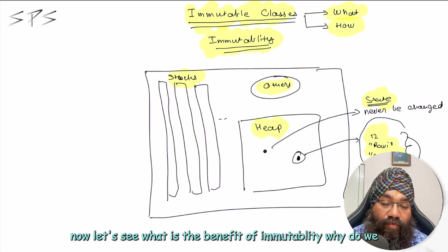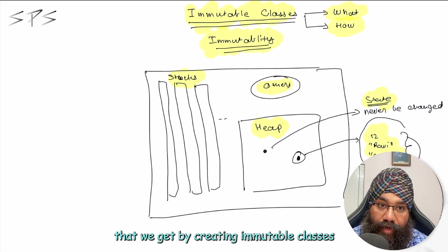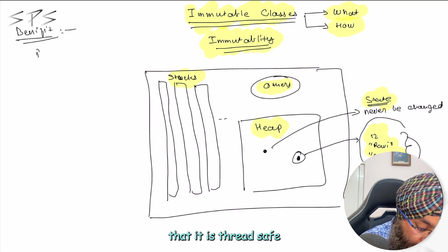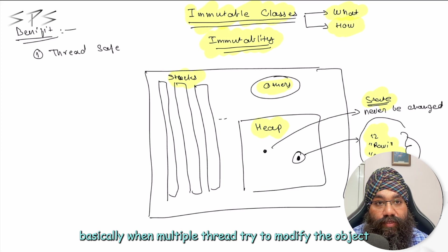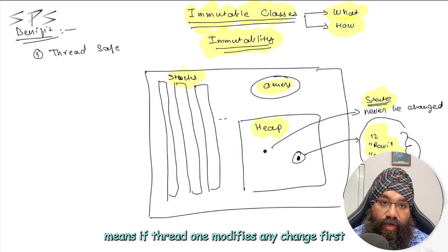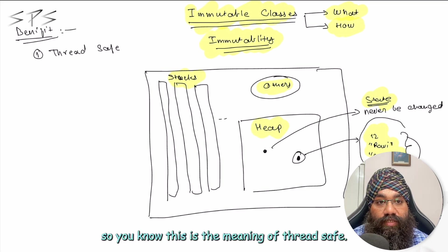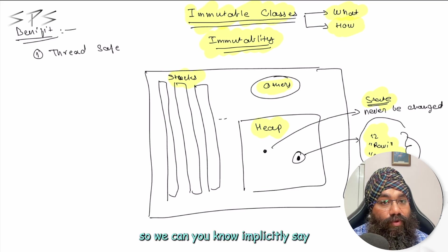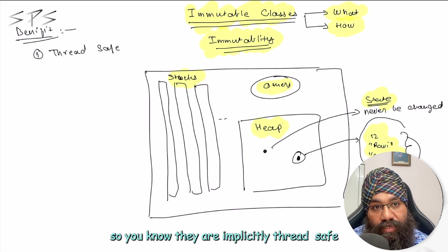Now let's see what is the benefit of immutability — why do we want to create immutable classes? The first benefit is that it is thread safe. When multiple threads try to modify the object, the changes should be consistent — if thread one modifies something first and then thread two tries to modify it, the changes of thread one should be visible to thread two. But since in the immutable case they will never be modified, we can implicitly say that they are thread safe because no thread will ever be able to modify them. They are implicitly thread safe.